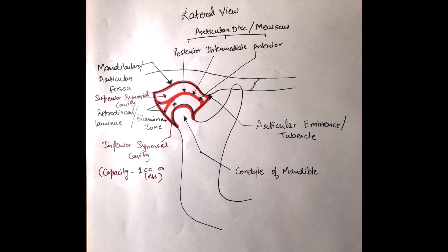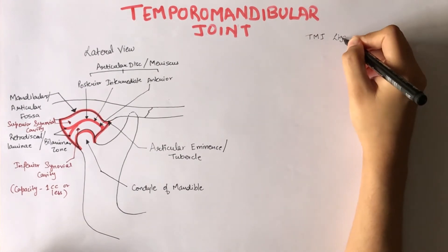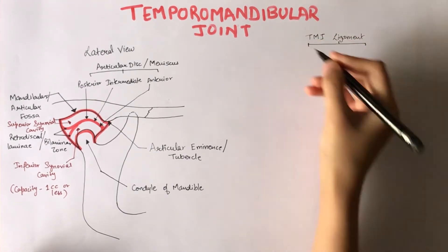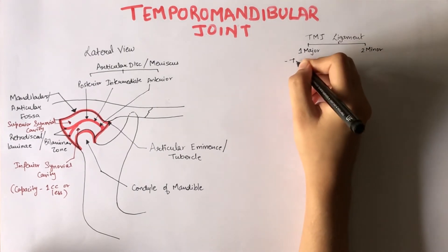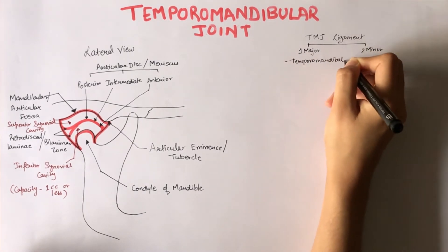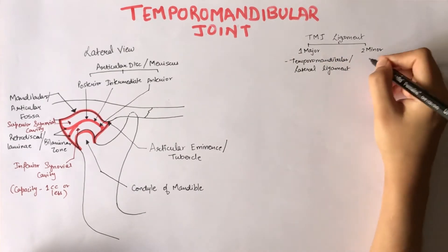There are three ligaments associated with the temporomandibular joint. One major and two minor ligaments. The major ligament is the temporomandibular ligament or the lateral ligament. The minor ligaments are the stylomandibular and the sphenomandibular ligaments.